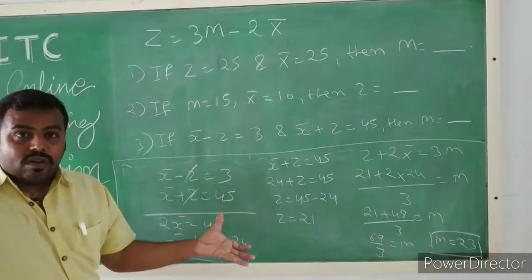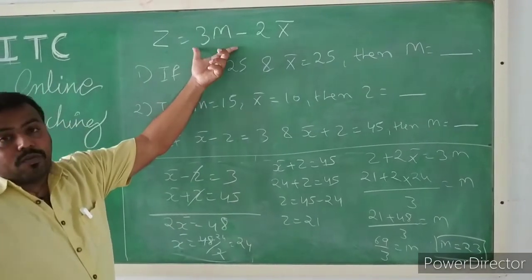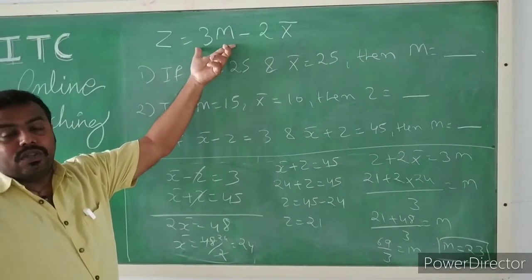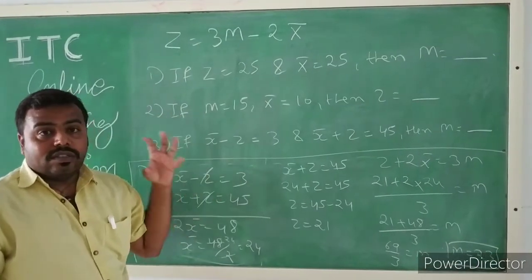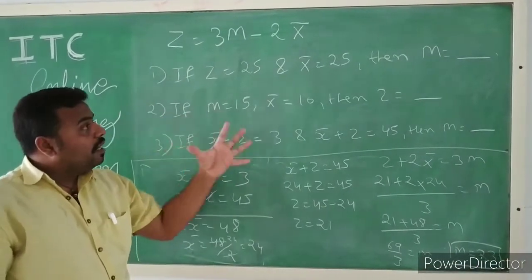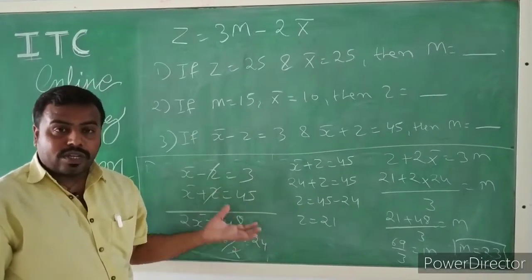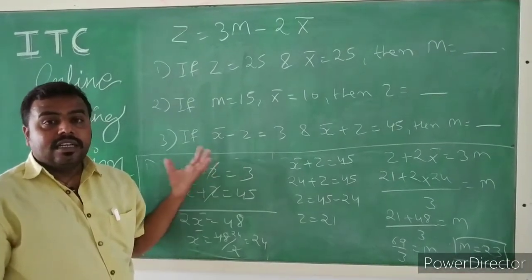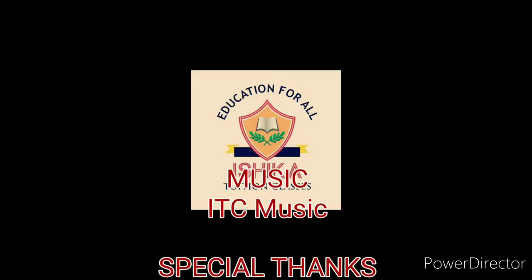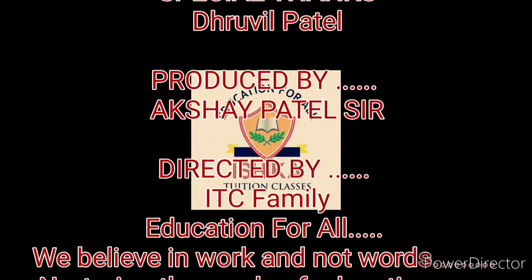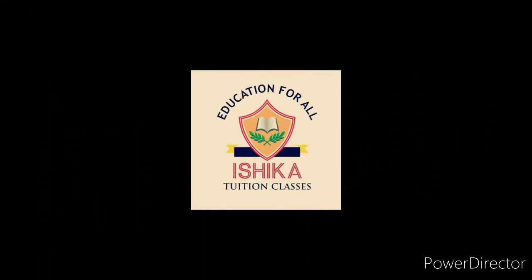This way you can solve multiple choice type questions using the formula Z = 3M − 2x̄. Hope that you have understood this multiple choice type of question. Please go to my YouTube channel, Physical Education Classes. Subscribe, like and share my video. Thank you.